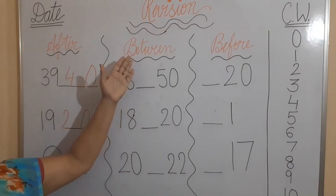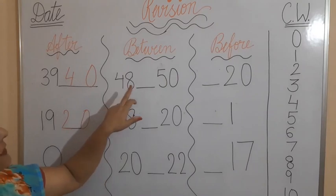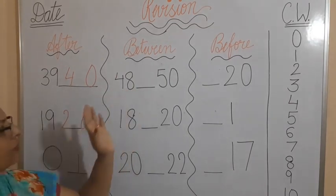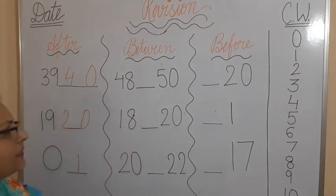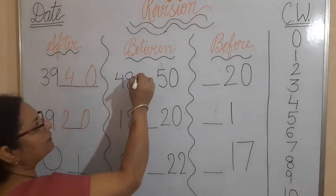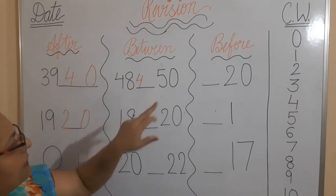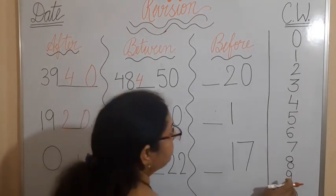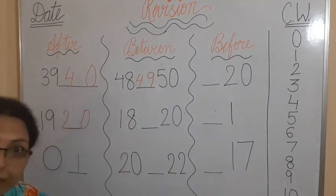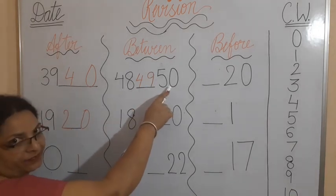Then next example is of between. Your second example is of between: 48 dash 50. It means what comes after 48? First of all, you see the first letter here 8. 4 will remain same here, 4 as it is. And second digit you have to see. What comes after 8? It is 9. So you have to write 9. 49 comes after 48. 49 is between 48 and 50. Did you understand? Okay.